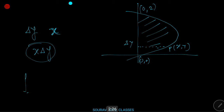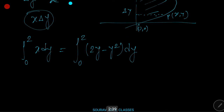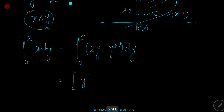The approximating rectangle can move from y = 0 to y = 2, so the required area = ∫₀² x dy = ∫₀² (2y - y²) dy = [y² - y³/3]₀² = 4 - 8/3 = 4/3 square units.